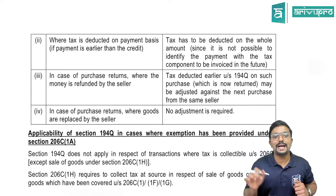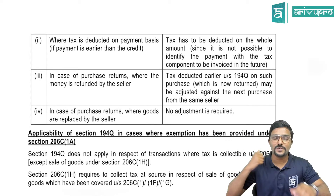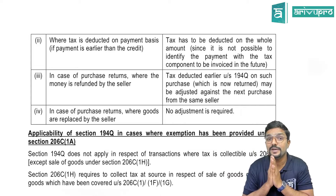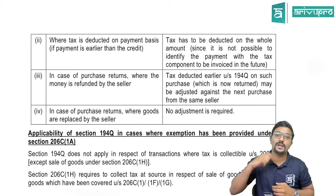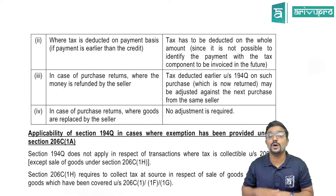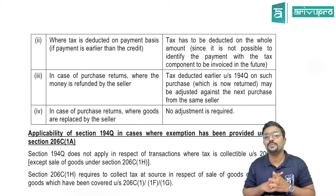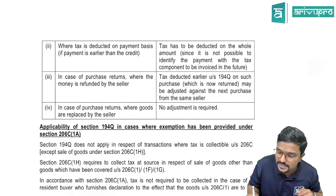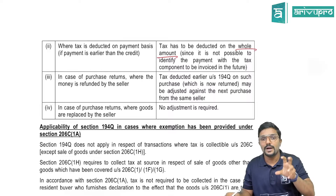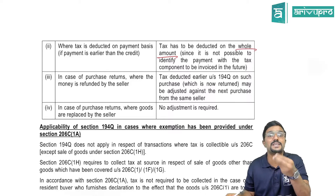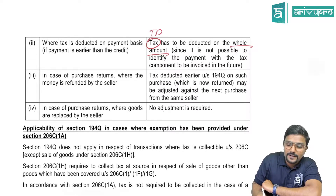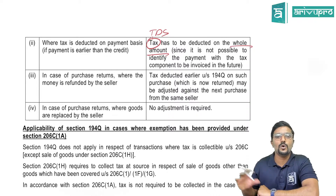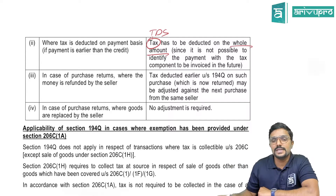Next: where tax is deducted on a payment basis — that is, making an advance payment. Since TDS under Section 194Q is deducted at the time of payment or at the time of credit, whichever is earlier, if an advance payment is being made, TDS has to be deducted on the whole amount including the indirect tax component, since it is not possible to identify the payment with the specific tax component to be invoiced in the future.